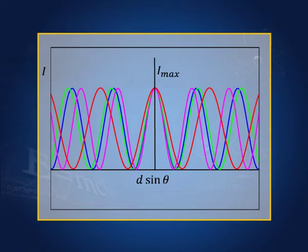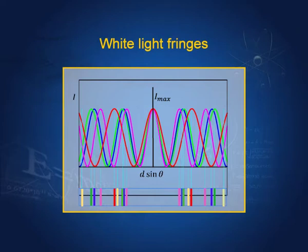At the center, all these waves are in phase because they travel the same distance, so they combine to make a white fringe. As we go away from the center, we see fringes of various colors. So the center shows a white fringe, and the surrounding pattern consists of colored fringes from each component color of the white light.